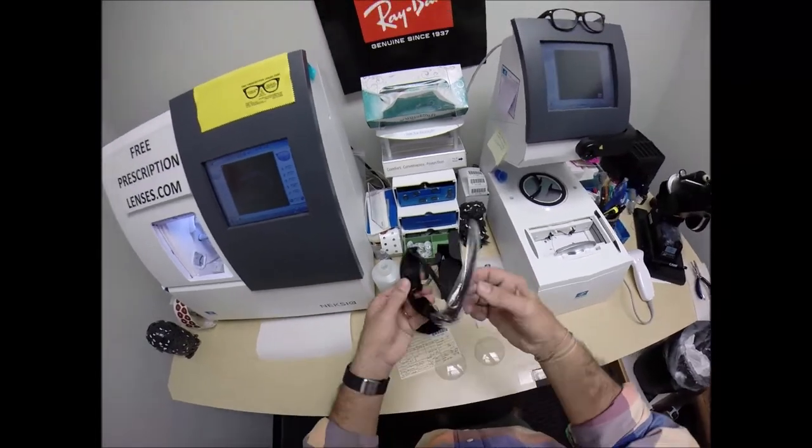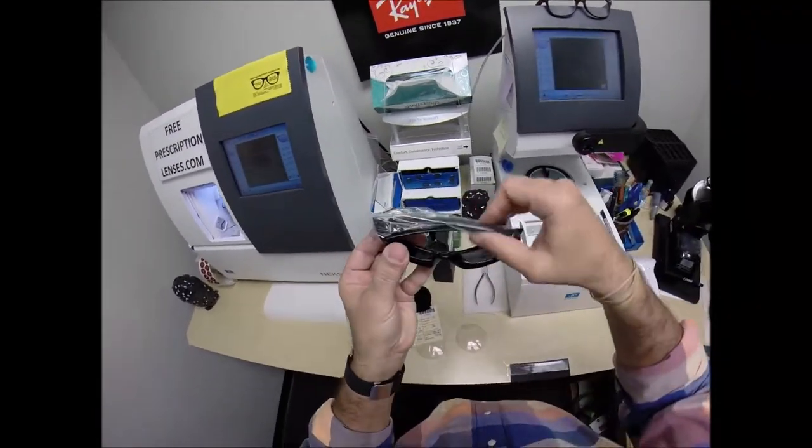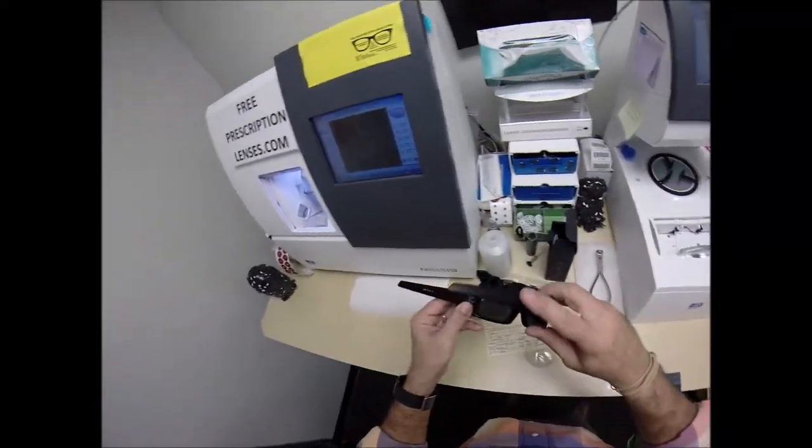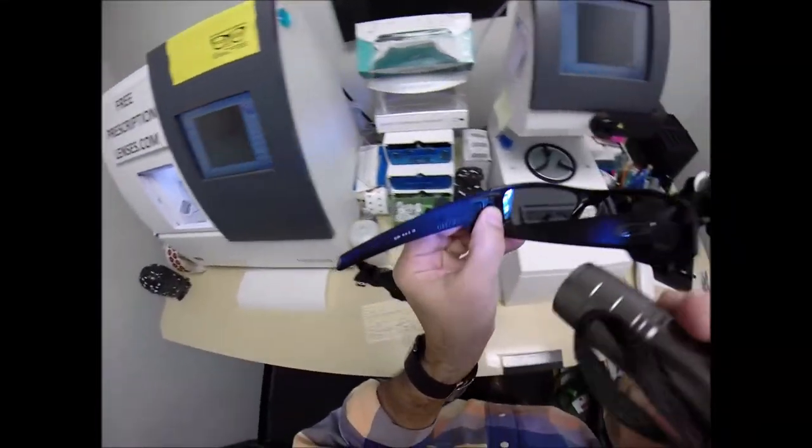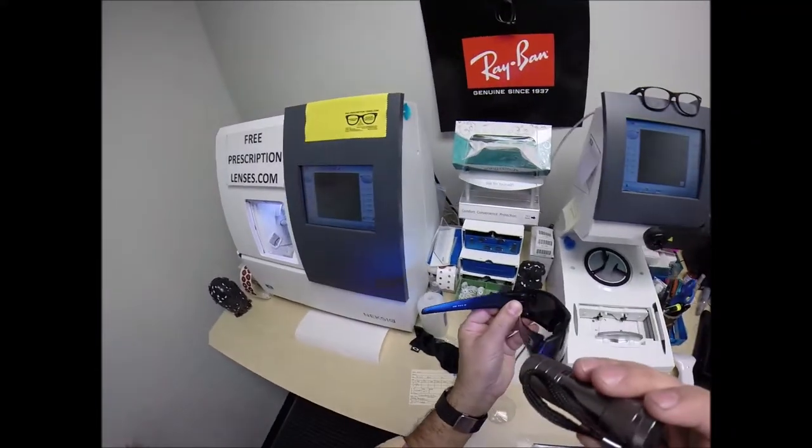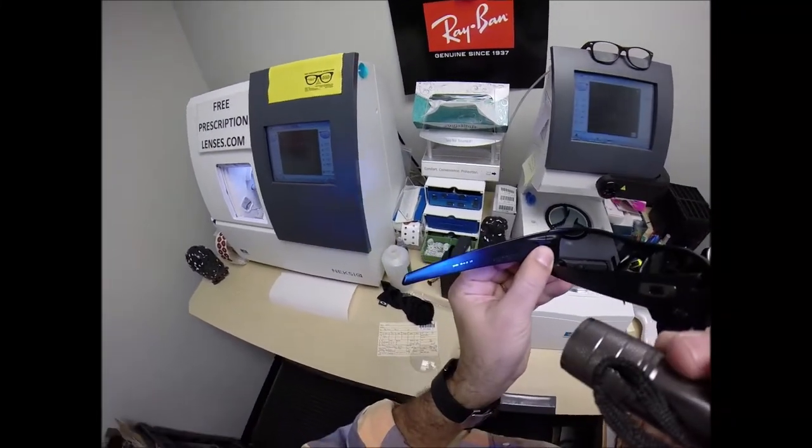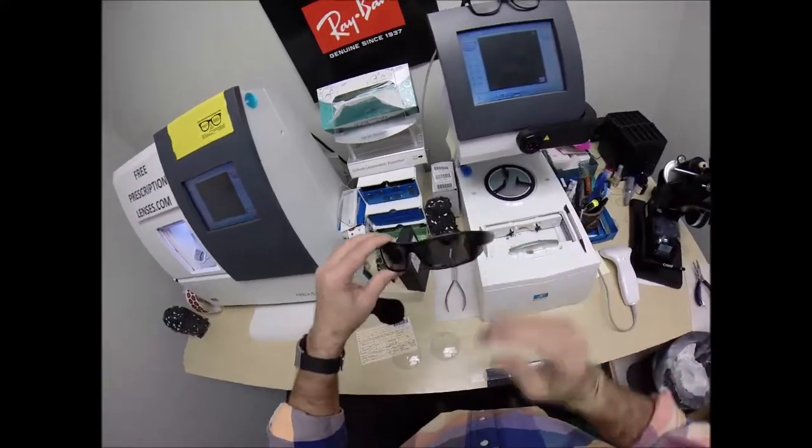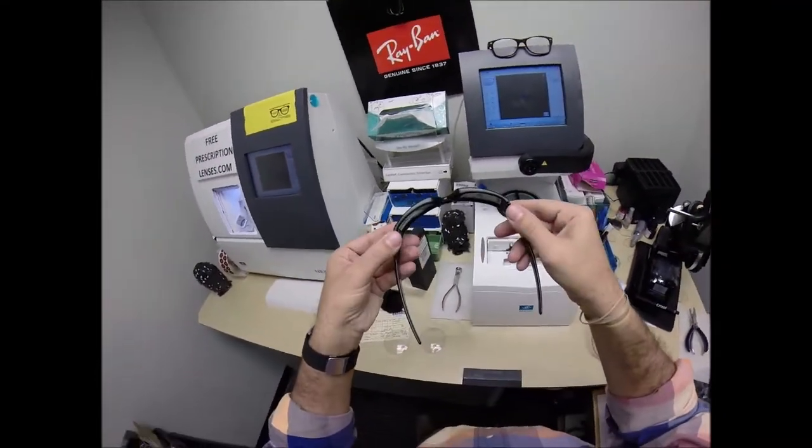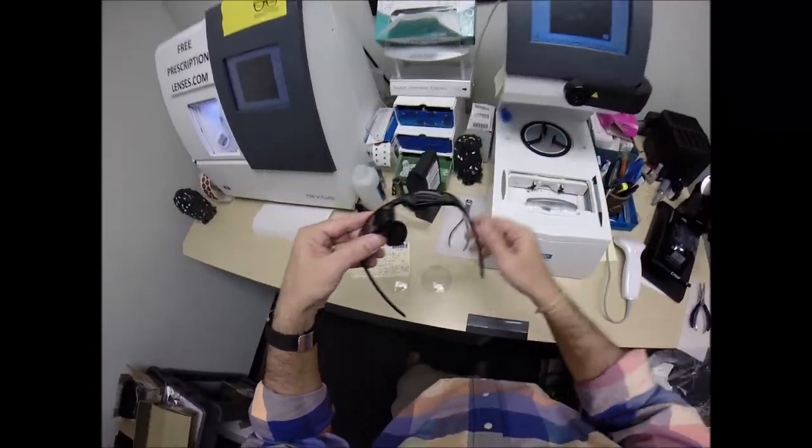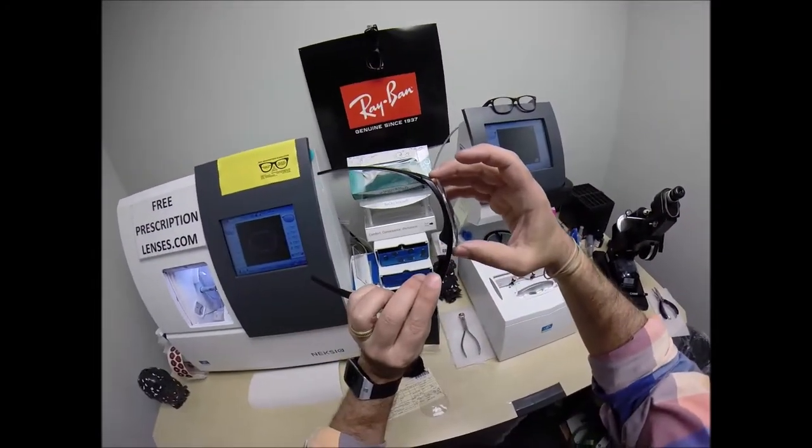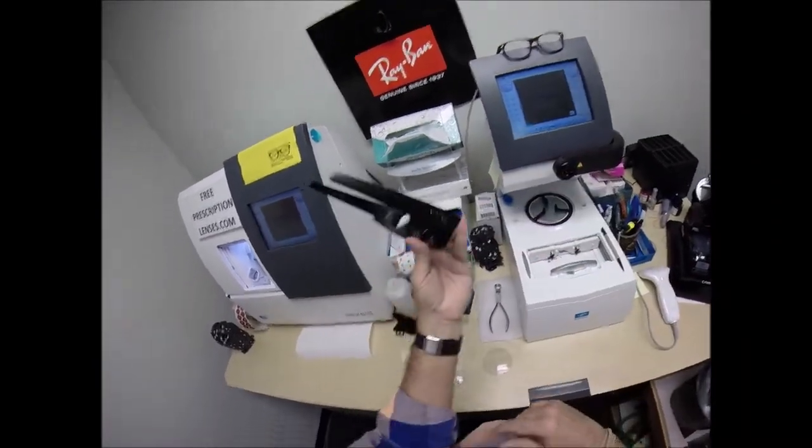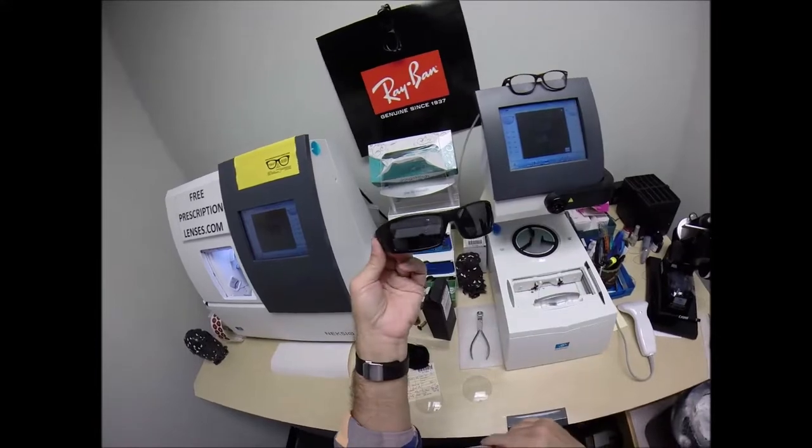They come with a little plastic sleeve on the left temple to protect the temples from rubbing together during shipping. This is the Oakley gas can, color 856, 60 eye size with the 15 bridge. Great wrap around sunglasses with some curvature to it, some wrap. It blocks the side light.